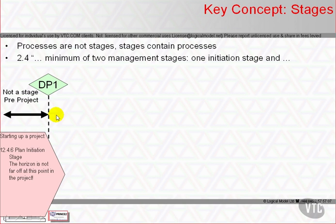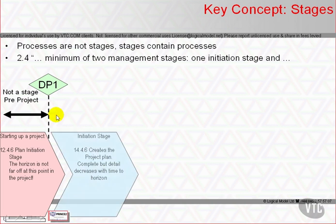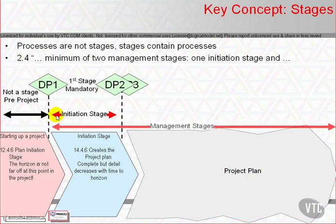Those chapters' sections 1, 2, 3, and 4 are the process's purpose, objectives, context, and then each of its activities. So Authorised Initiation, which is the first activity of the DP process, is manual reference 13.4.1, or DP1 for short.